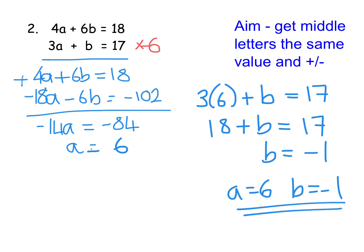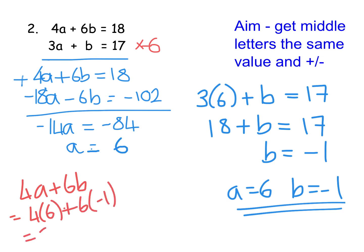Then I'll do my little check. I didn't use the top equation, so I'll use that one now: 4a plus 6b becomes 4 times 6 plus 6 times minus 1. That's 24 take away 6, which is 18 — which is what was in the top equation. So I know I've got it right. Remember, the check doesn't need to be done, but it's a really handy thing to do.